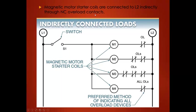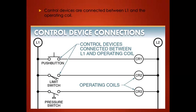Motor starter coils — as we talked about in a previous lesson — have overload contacts connected between the load and L2. Control devices are always on the left in a standard ladder diagram. Control devices include your push buttons, limit switches, and pressure switches. Your loads will be on the right.